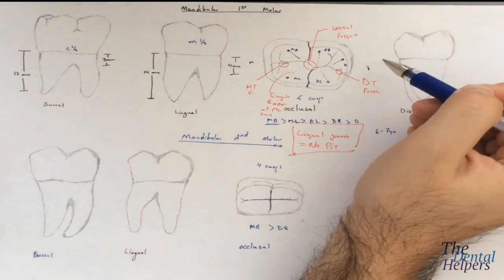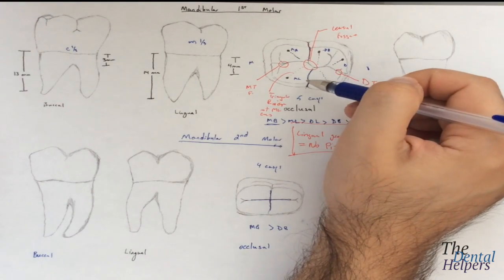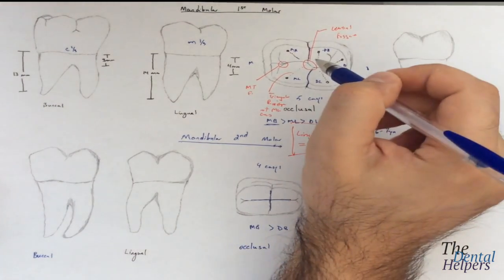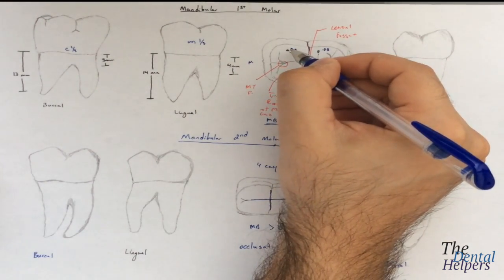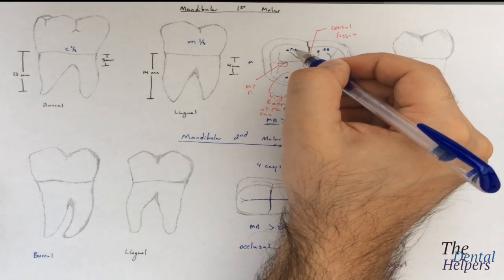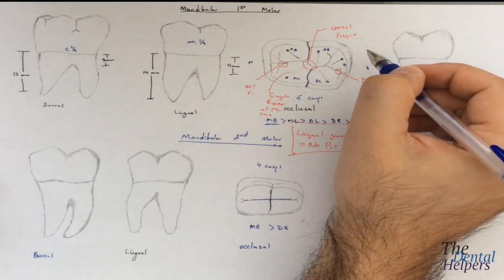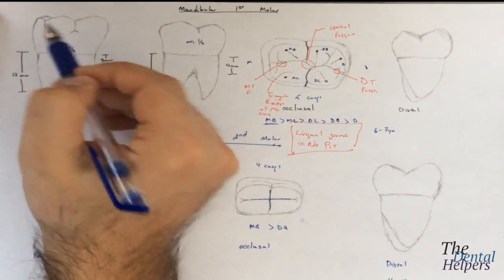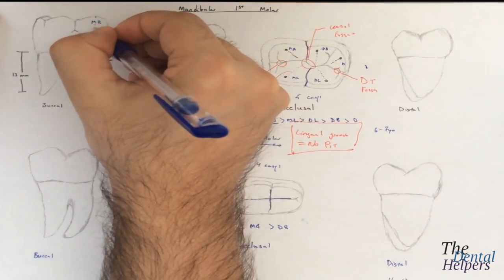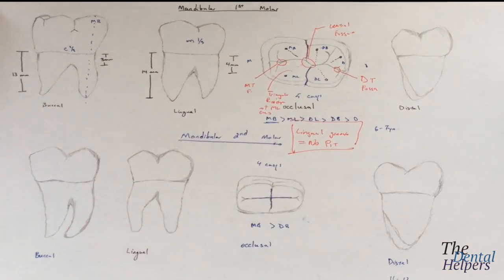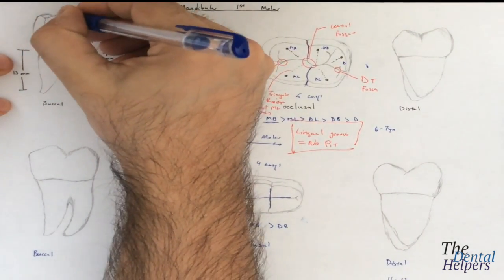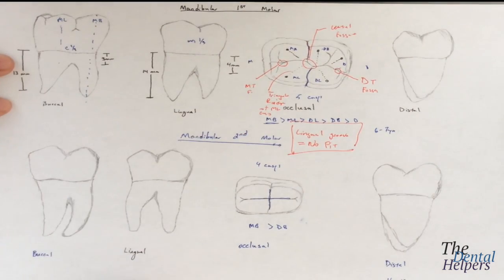In terms of the cusps, the lingual cusps are going to be typically sharper than the buccal cusps. In terms of alignment, the mesial buccal cusp is going to be more centered over the root, and the mesial lingual is going to be more in line with the lingual border of the root. We see that right here is the distal cusp, so the mesial buccal cusp is basically in line with the root. The mesial lingual, on the other hand, is not in line — it's more in line with the border of the lingual root.